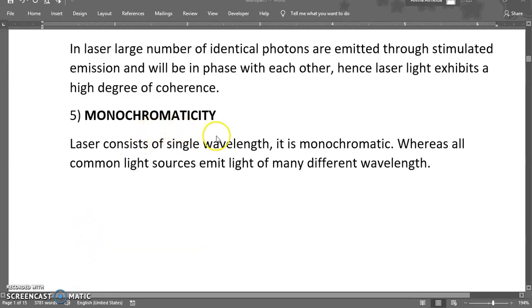Next is monochromaticity. The laser consists of a single wavelength. It is highly monochromatic. Whereas all the other common sources like tube light or bulb emit light in the form of many different wavelengths.